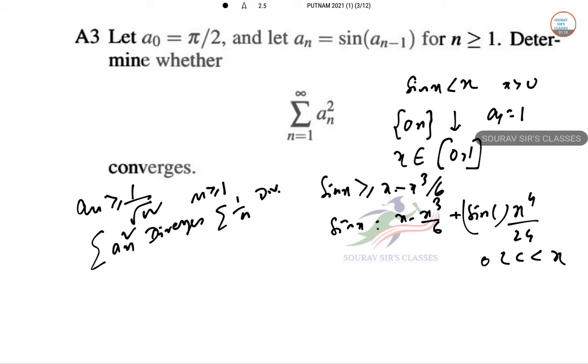We now take n = 1 being a trial and suppose that a_n ≥ 1/√n, so sin(a_n) ≥ 1/√(n+1).